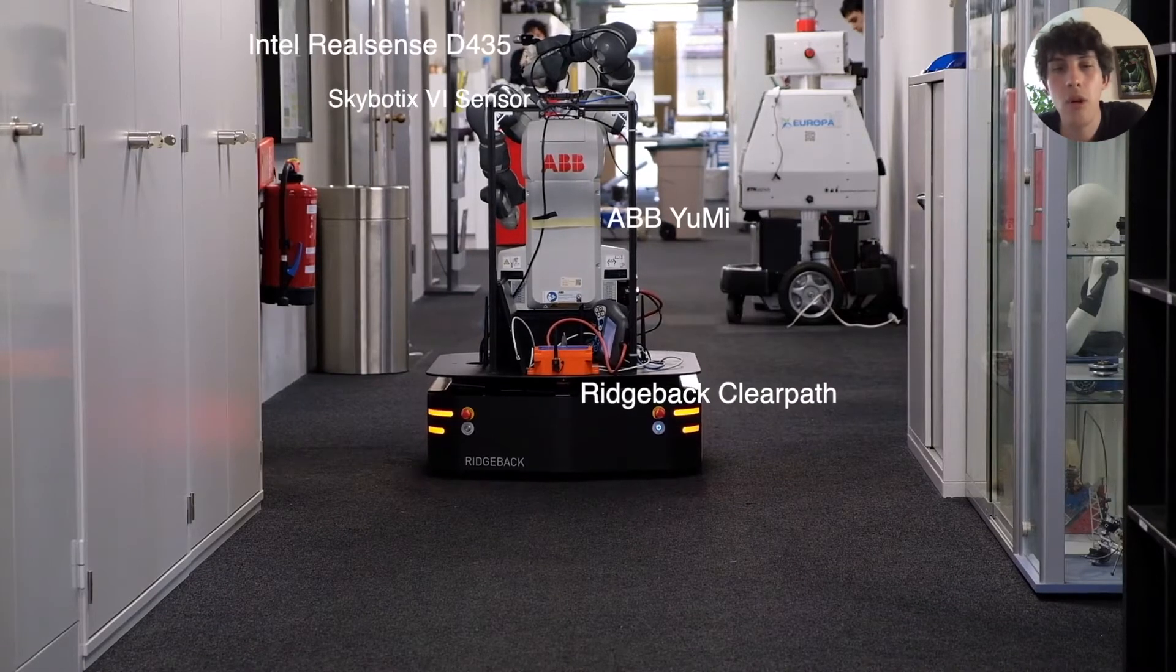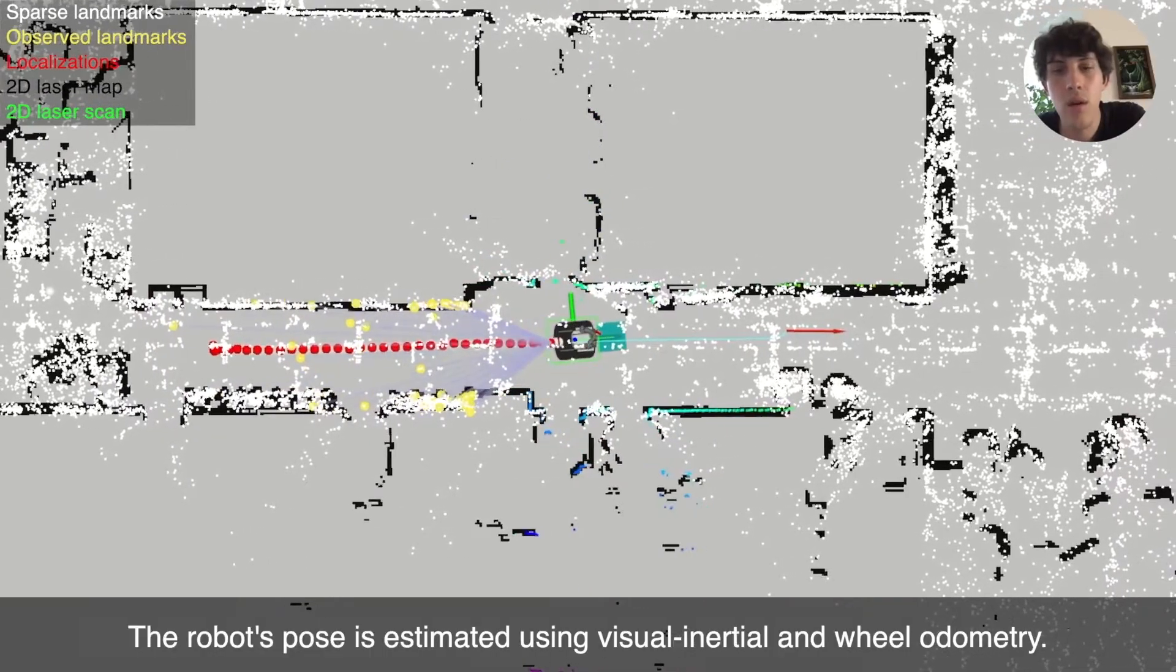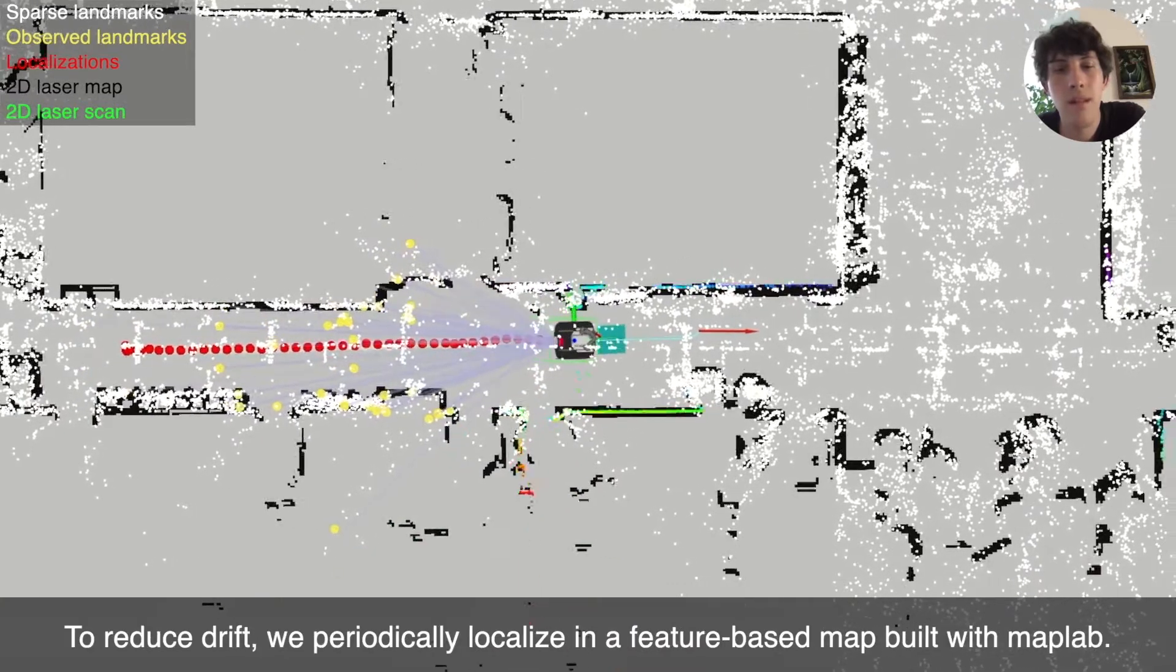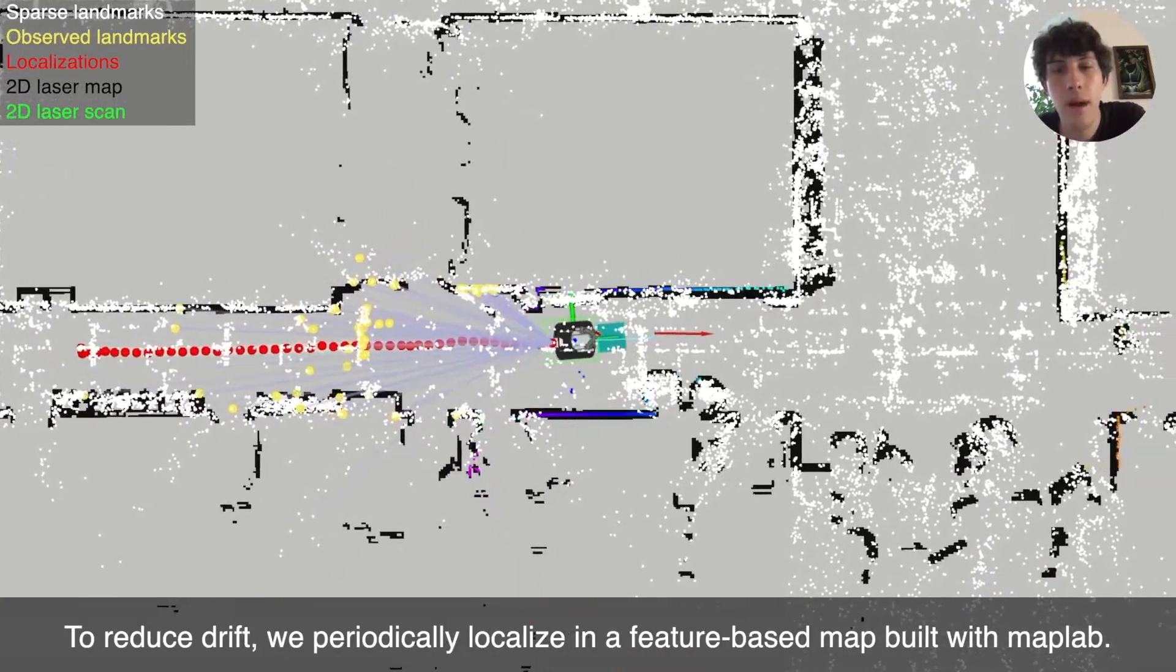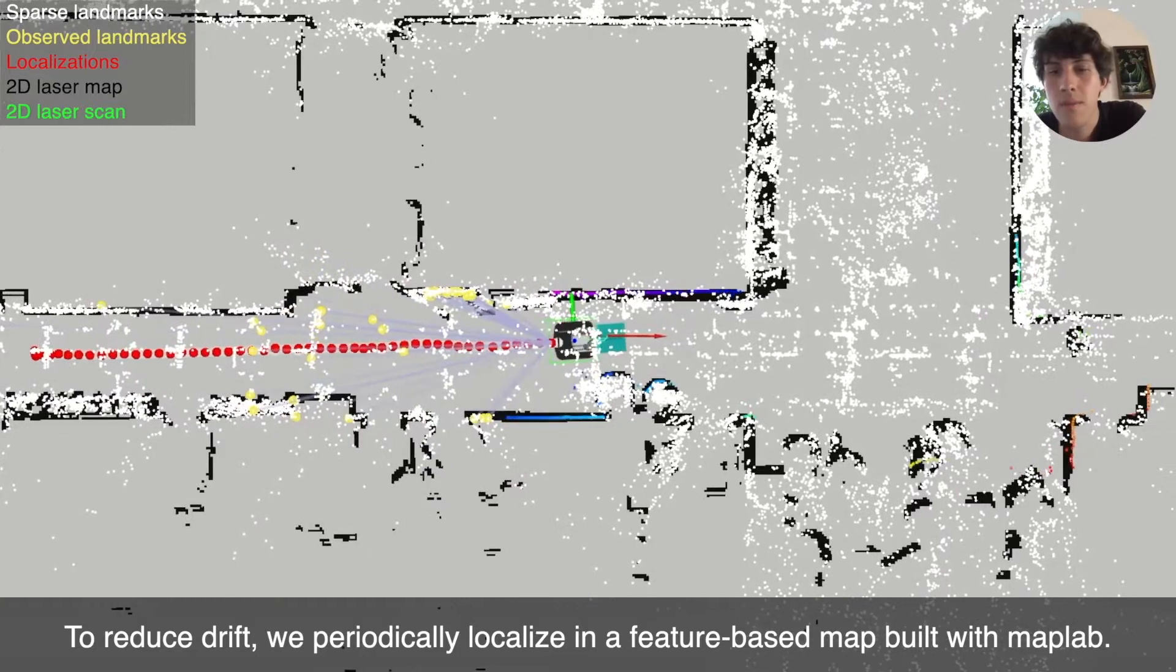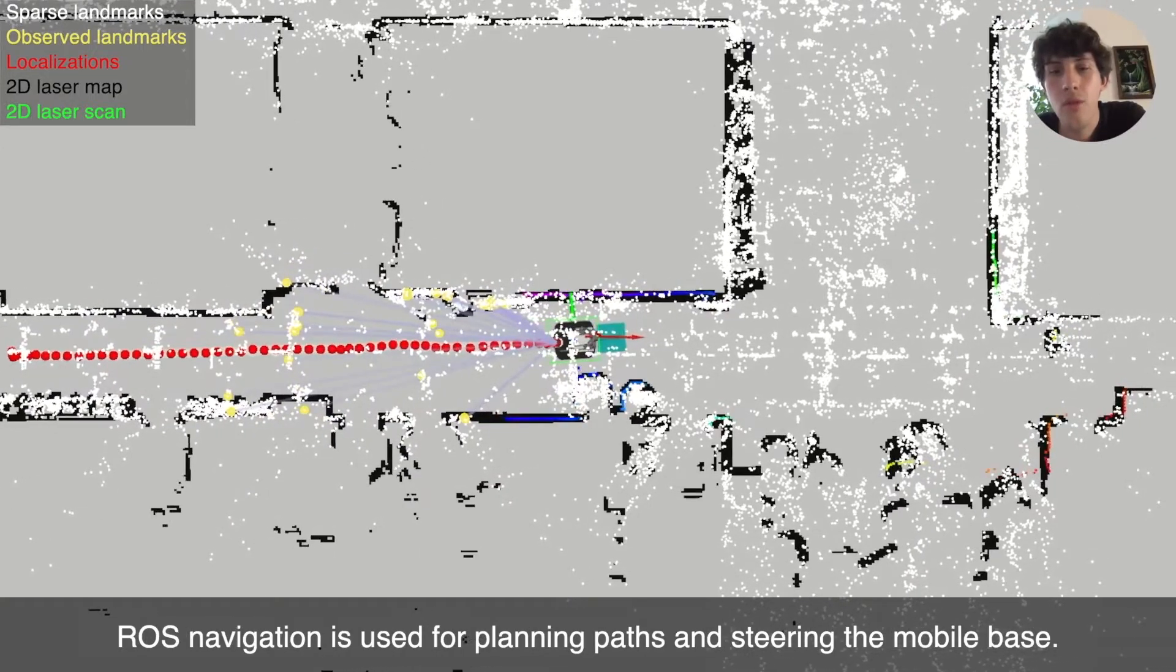Sparse features, shown here in white and yellow, are used by ROVIO-LI to localize the robot in a pre-built sparse and globally consistent 3D map, which was built using Maplab together with an occupancy grid built using 2D lidar measurements.